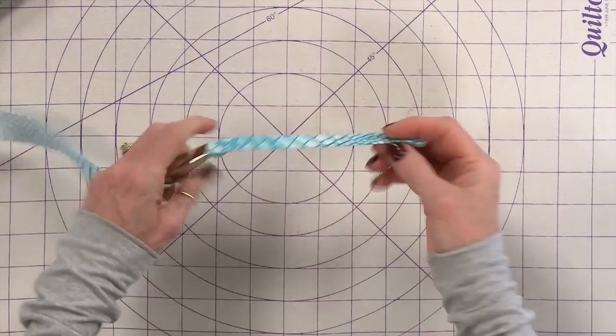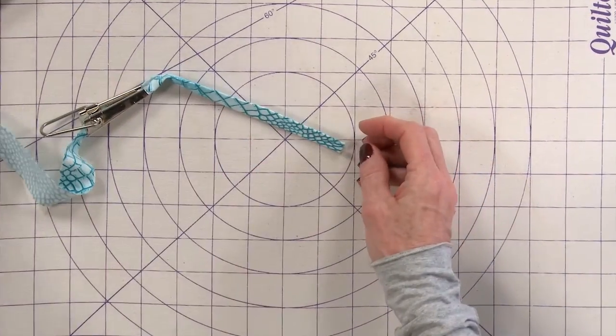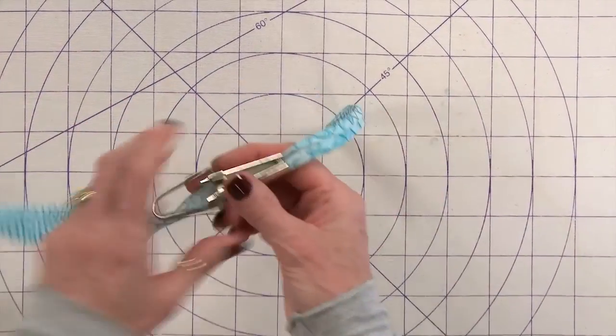And that's it. Very easy to do. So now you can always coordinate your bias tape to whatever garment that you have.